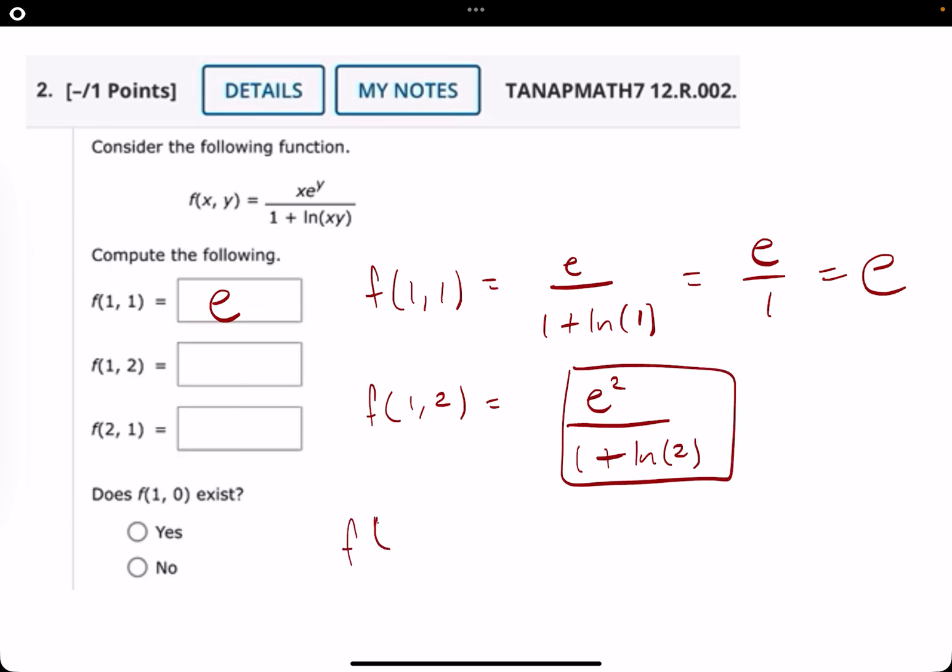So now, f of 2, 1 would be 2e to the 1st, so just 2e, over 1 plus ln of 2 as well. So you'd just leave that like that, and that should be good.